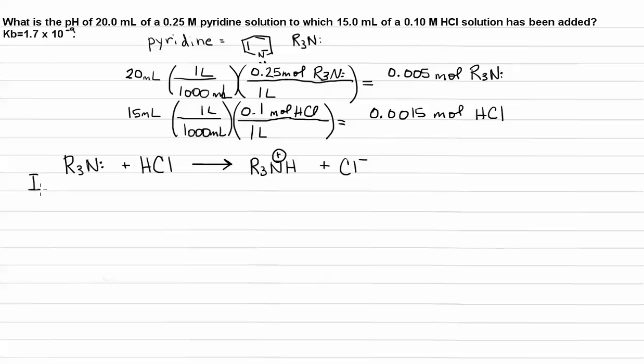Looking at the IC final table, again, it's in terms of moles. So the initial number of moles of our base is 0.005. And the initial number of moles of our acid is 0.0015. We have no initial number of moles of conjugate acid, R3NH+. And honestly, we don't really care what's going on with the chloride. Chloride is an ion that does not affect the pH. It's kind of a spectator in the reaction. So I'm just going to kind of ignore what happens with chloride.